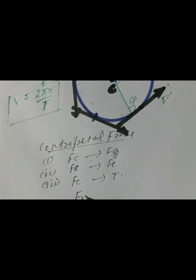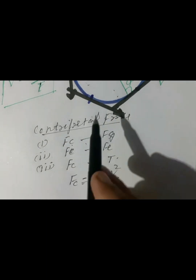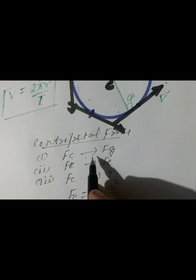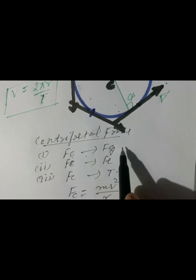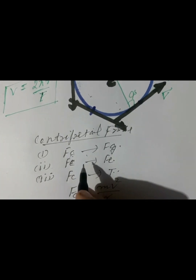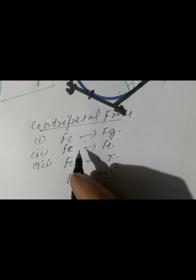The centripetal force is equal to mv² over r. To summarize: centripetal force is not a separate force — its origin is gravitational force in the first case, electric force in the second, and tension force in the third case. Thank you for watching.